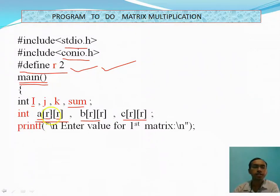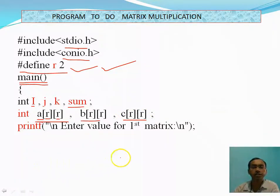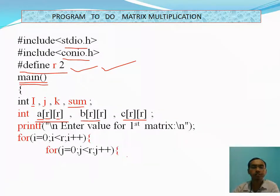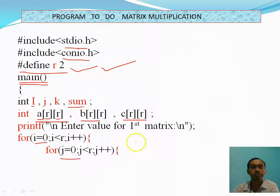We have to take matrix A and B as input from the keyboard. It is showing the message 'Enter the value of the first matrix.' So we are using two for loops for taking the input from the keyboard for the first matrix — one for row and one for column. i is for row and j is for column.